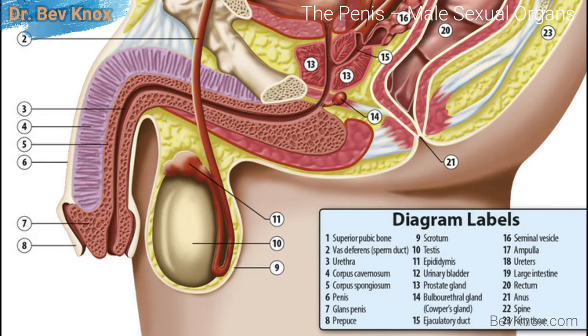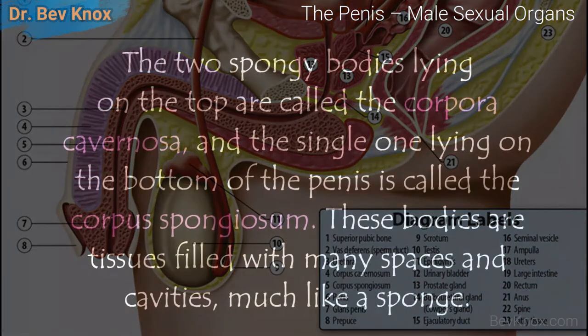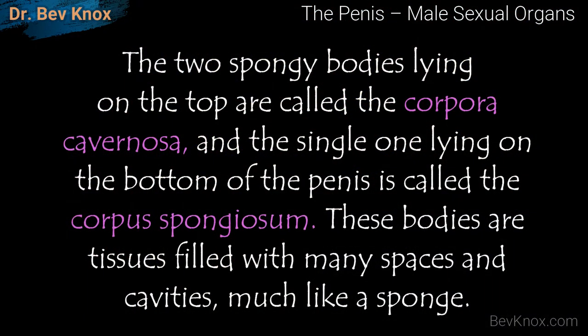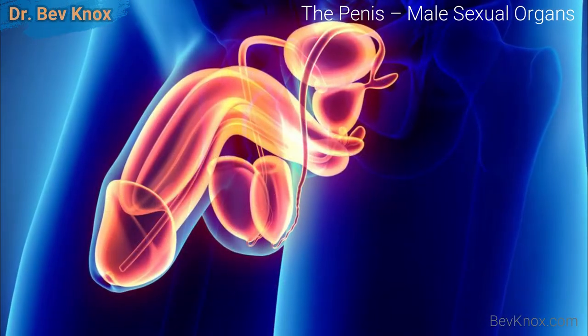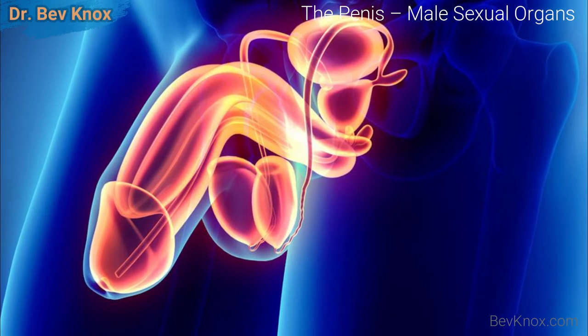Internally, the penis contains three long cylinders of spongy tissue running parallel to the urethra, which is the pathway through which semen and urine pass. These bodies are tissues filled with many spaces and cavities like a sponge, richly supplied with blood vessels and nerves. In the flaccid, or unaroused, state they contain little blood. Erection occurs when they become engorged with blood and expand, making the penis stiff.